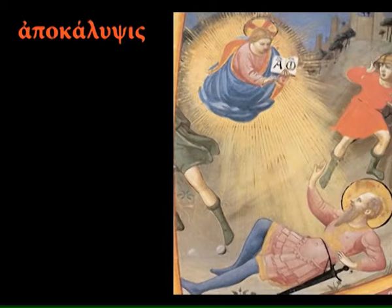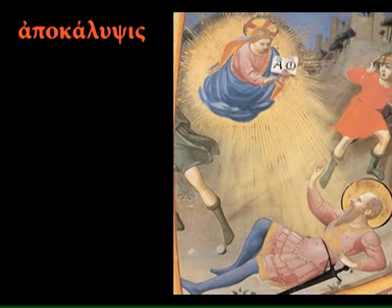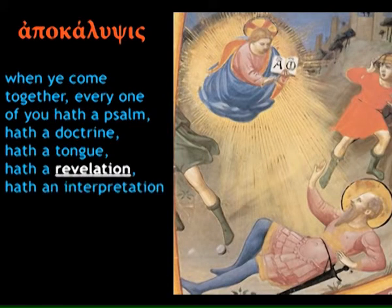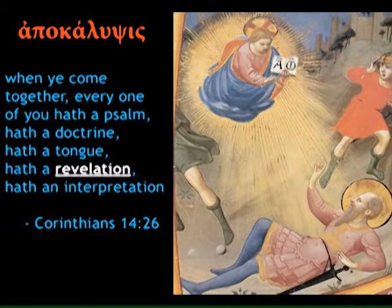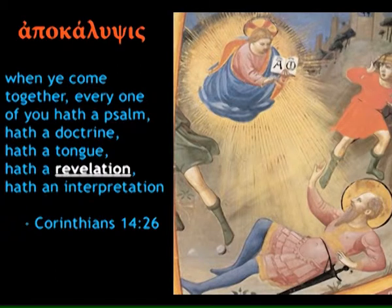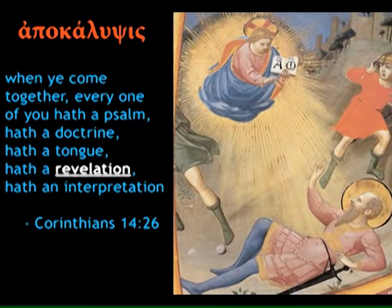This is St Paul's Apocalypse on the road to Damascus. You can see something that was hidden — an angel in this case — being revealed. When you see the word Apocalypse in the Bible, this is what you see. For example: 'When ye come together, every one of you hath a psalm, hath a doctrine, hath a tongue, hath a revelation, hath an interpretation.' A revelation is something we can bring to a party, and maybe someone else will have an interpretation for it. It's not the end of the world.